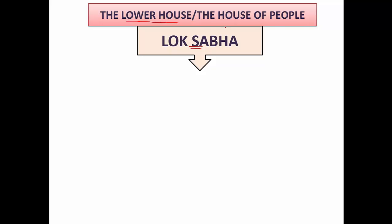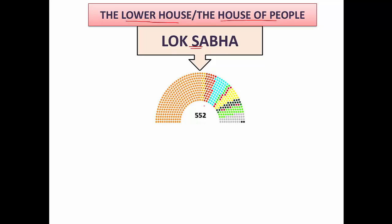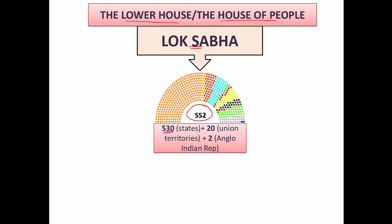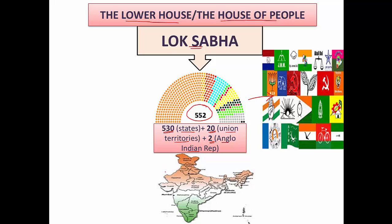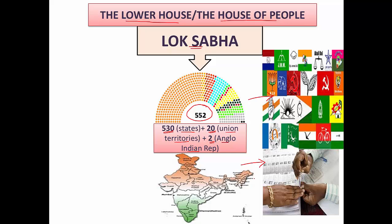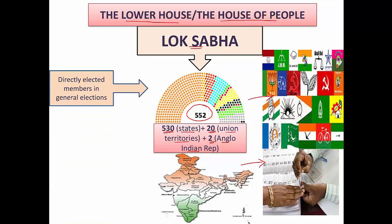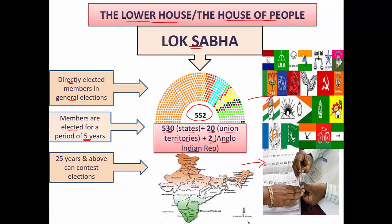The Lok Sabha is the lower house, also called the House of the People. The maximum number of seats in the Lok Sabha is 552, out of which 530 are representatives from different states, 20 from the union territories, and 2 from the Anglo-Indian community. Members of the Lok Sabha are directly elected through general elections for a period of 5 years. To contest in the elections, the minimum age required is 25 years, and to cast your vote you need to be 18 years and above.